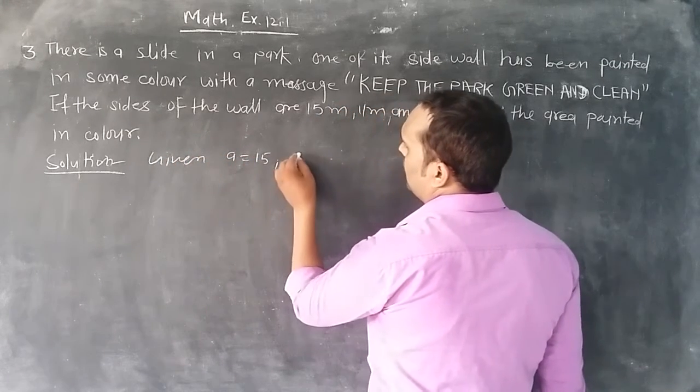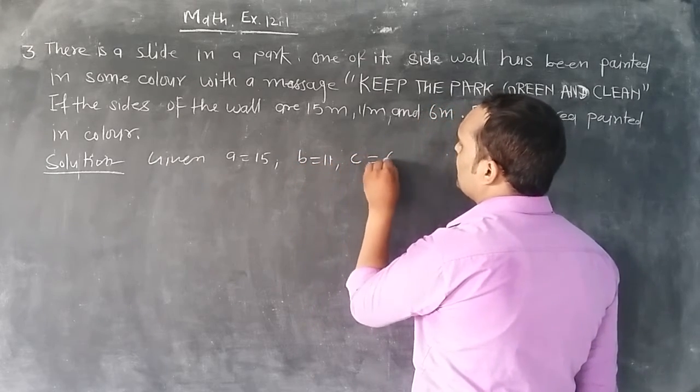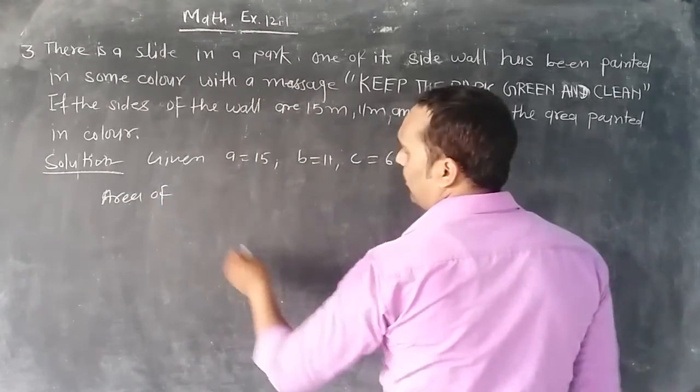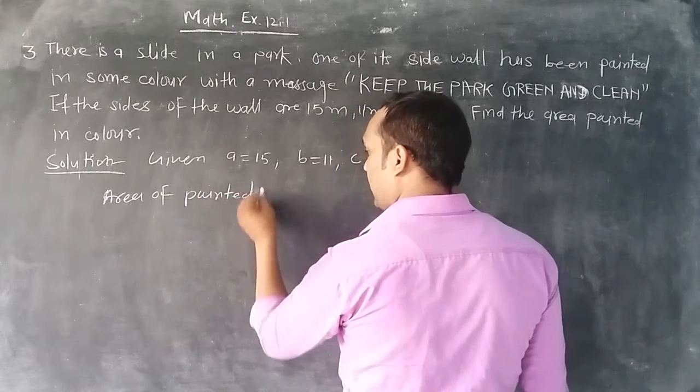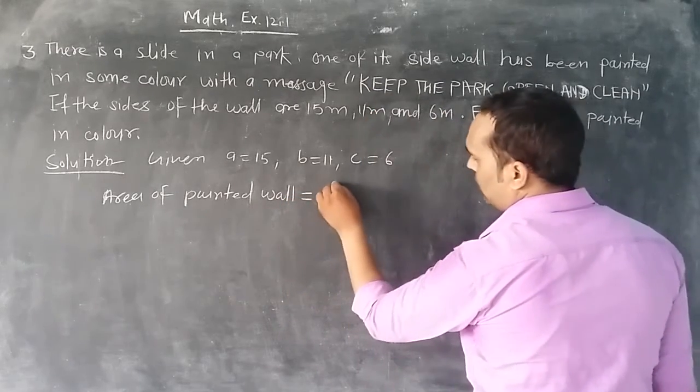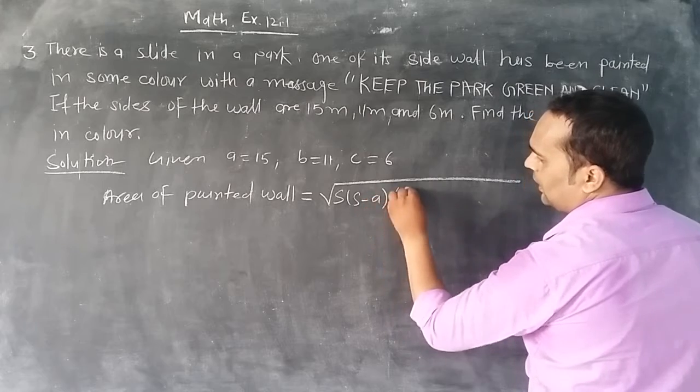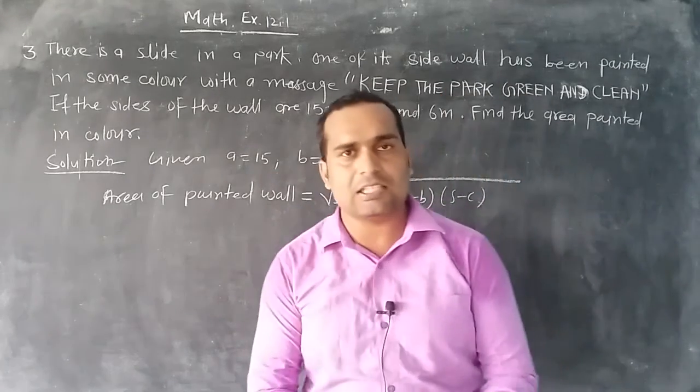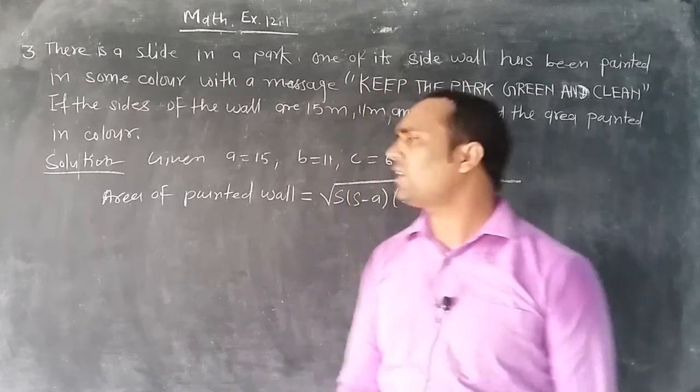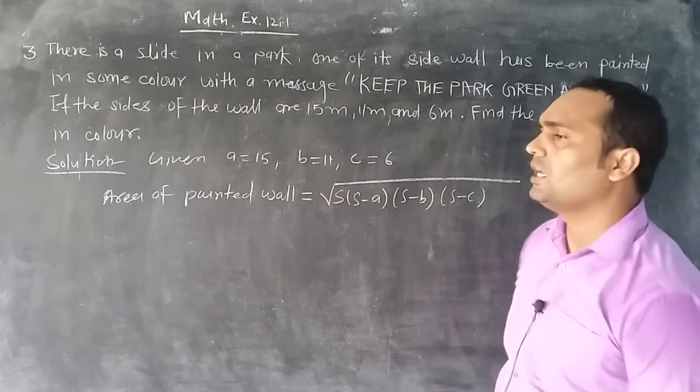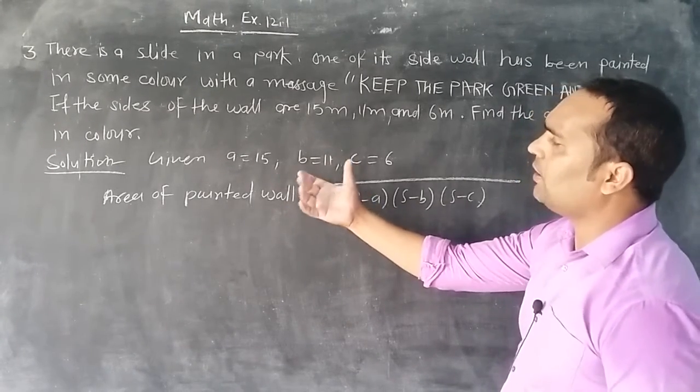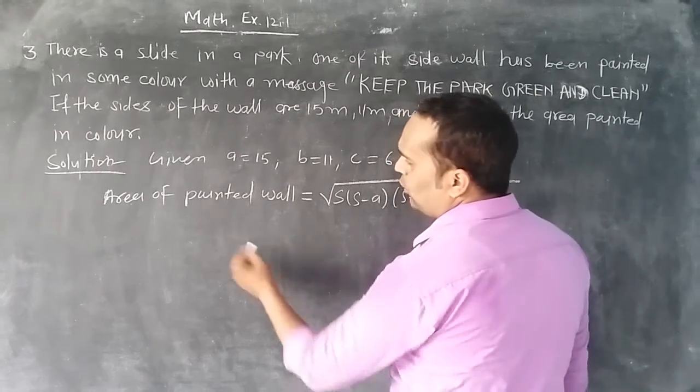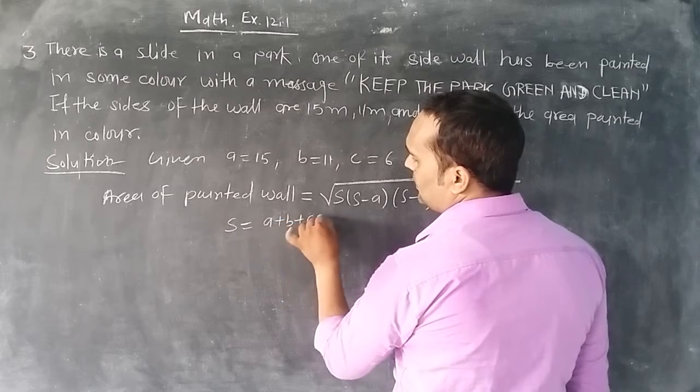Given: suppose a equals 15, b equals 11, and c equals 6. Area of painted wall equals √[s(s-a)(s-b)(s-c)] where s equals (a+b+c)/2.